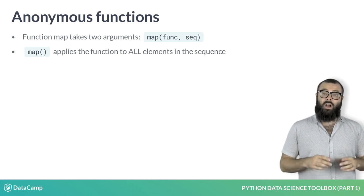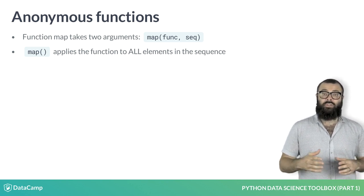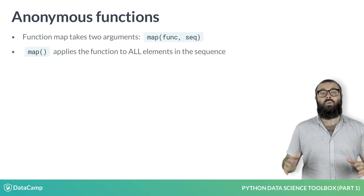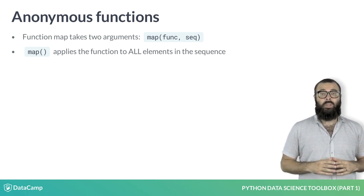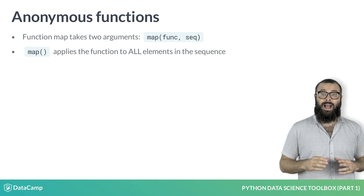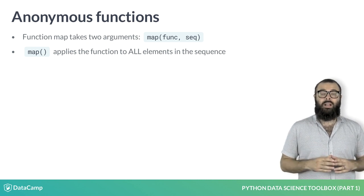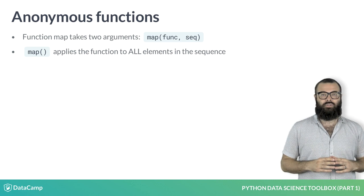Map takes two arguments, a function and a sequence such as a list, and applies the function over all elements of the sequence. We can pass lambda functions to map without even naming them, and in this case, we refer to them as anonymous functions.